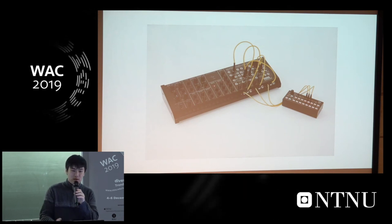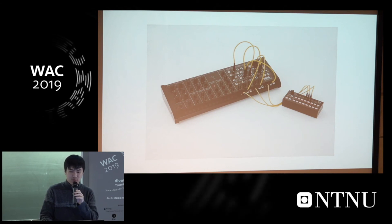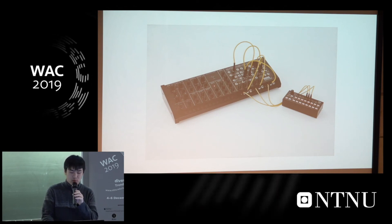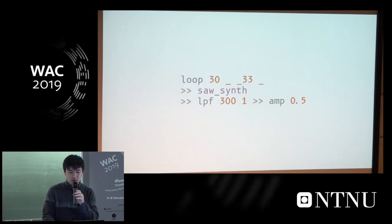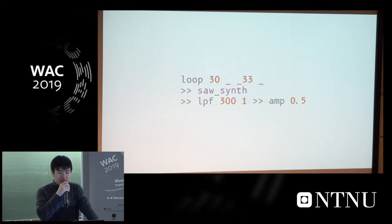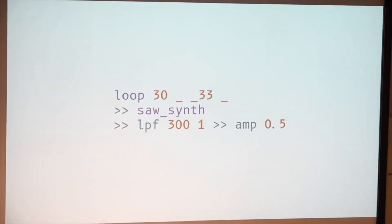We also use the idea of connecting different functions in our syntax design, and we come up with our first syntax prototype. We use the keyword 'loop' to take the sequence as input and output a trigger. This trigger is the input of the saw synthesizer, which outputs a signal. This signal is the input of a low-pass filter with a cutoff frequency of 300 and Q value of 1, and finally the signal is processed by the amplifier that brings the sound from the browser to the audio interface.